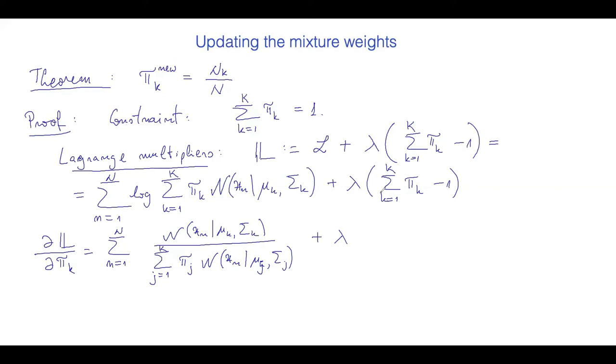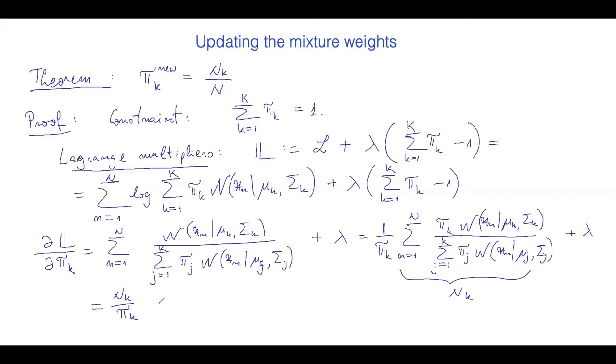That's going to be the normal distribution of x_n with μ_k, Σ_k over the sum with j from 1 to K of π_j times the normal distribution of x_n with μ_j and Σ_j. I'm writing this as 1 over π_k times the sum from n=1 to N of π_k times the normal distribution x_n given μ_k and Σ_k over the sum with j from 1 to K of π_j times the normal distribution. This sum is what we have defined as n_k, so this in the end comes down to n_k over π_k plus λ.